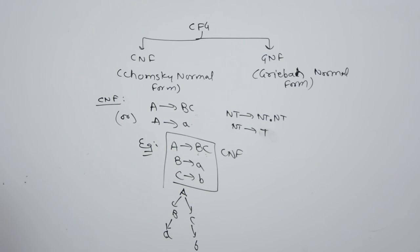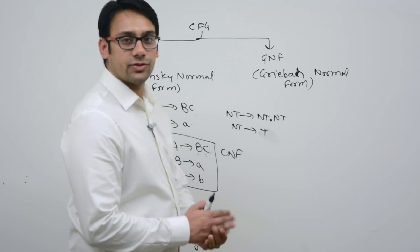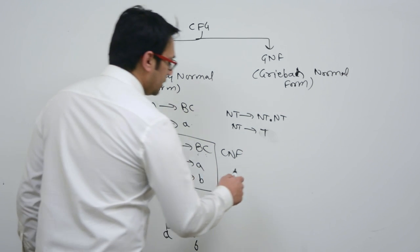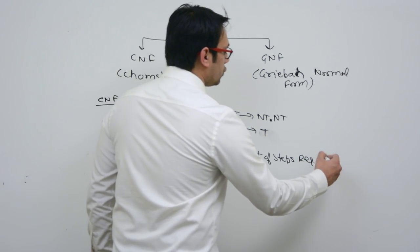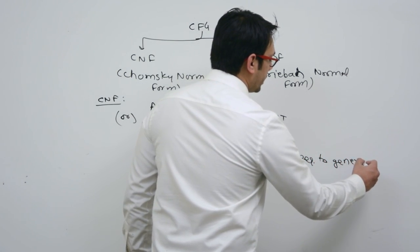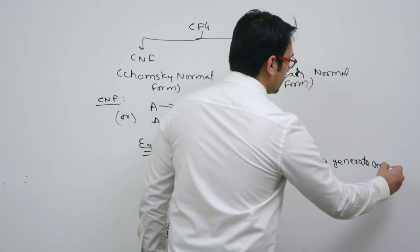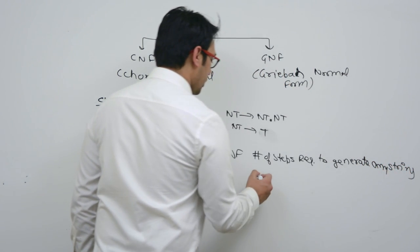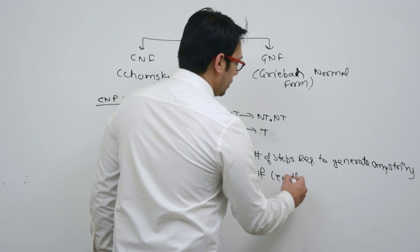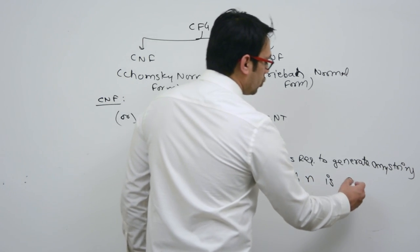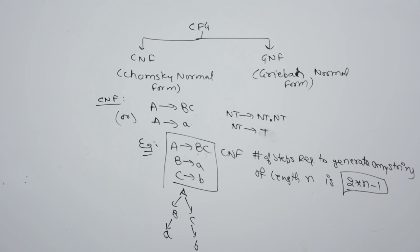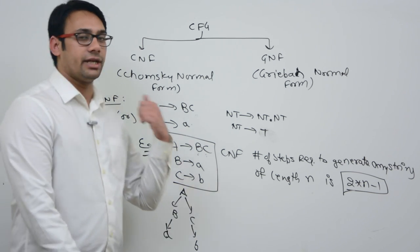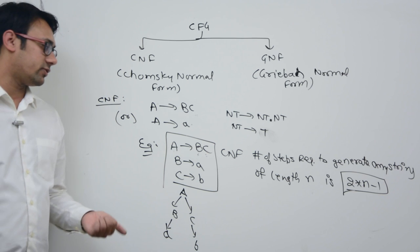The third advantage is that the number of steps required to derive any string of length n is exactly 2n − 1. This number of steps is guaranteed in CNF, which is not guaranteed in other cases.